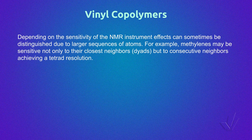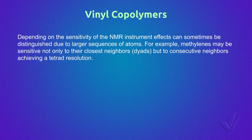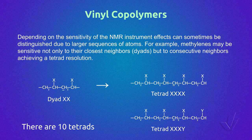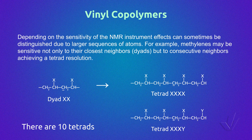Depending on the sensitivity of the NMR instrument, effects due to larger sequences of atoms can sometimes be distinguished. For example, methylene carbons may be sensitive not only to their closest neighbor (diads) but to consecutive neighbors, achieving a tetrad resolution. Examples of tetrads such as XXXX or XXXY can be seen in this figure.